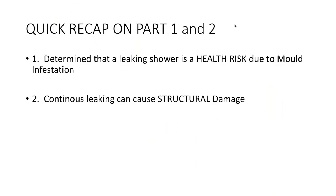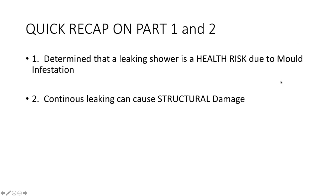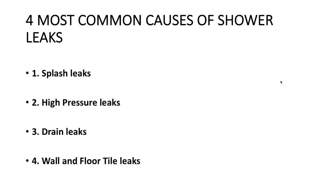Quick recap on parts one and two: we determined that a leaking shower is a health risk. A leaking shower due to mold infestation causes a lot of respiratory problems, and continuous leaking can cause structural damage to the property. The four most common causes of a shower leak start with splash leaks — typically leaks that occur when showering and water splashes against the door or frame.